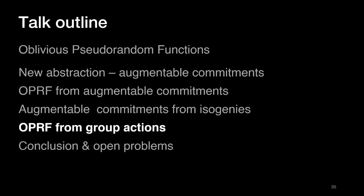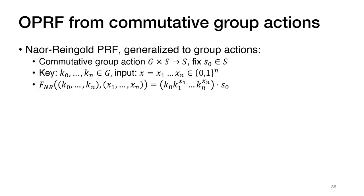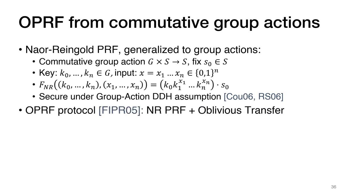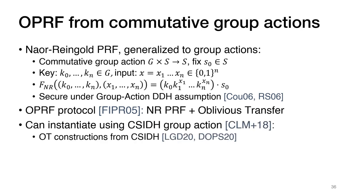The final thing I want to talk about briefly is the second construction of oblivious PRFs from group actions. This construction generalizes to group actions a Naor-Reingold-style PRF. It uses a commutative group action of a group G on a set S with some initial element S0. The PRF key is n+1 group elements, and given an n-bit input x, we apply group elements selectively according to the input bits. This is secure under the group action DDH assumption. This PRF can then be obliviously evaluated using practically the same protocol as in the group case, combined with an oblivious transfer, both instantiated using the CSIDH group action with recent maliciously secure oblivious transfer constructions.